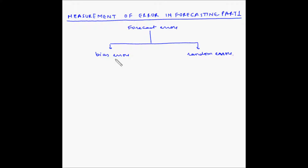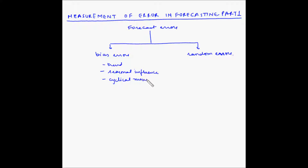Bias errors occur when there is a consistent mistake — that is, the forecast is always too high or always too low. These errors often result from inaccurately estimating the components of demand, such as trend, seasonal influence, or cyclical movements. So when these are inaccurately estimated, that is when bias errors occur.